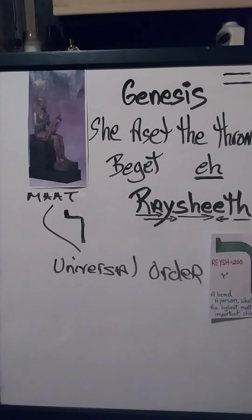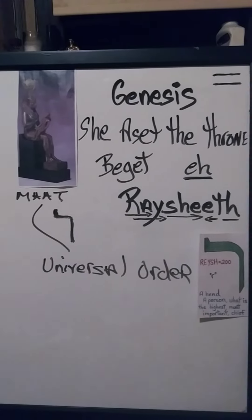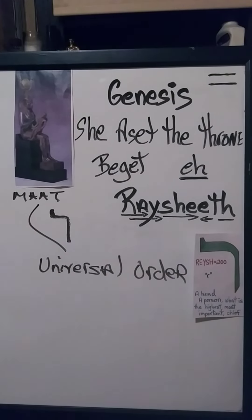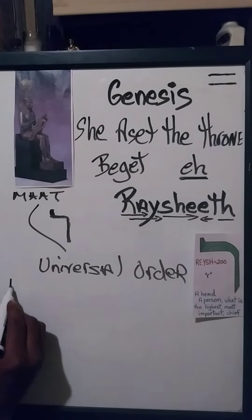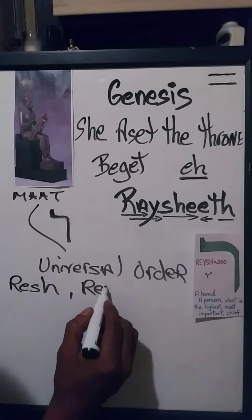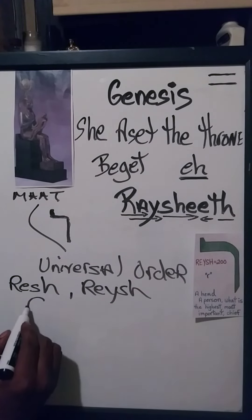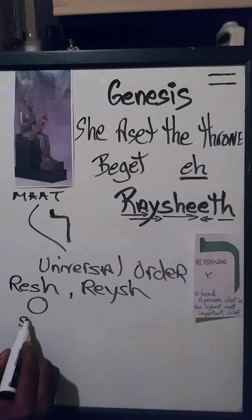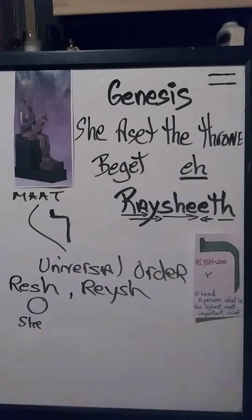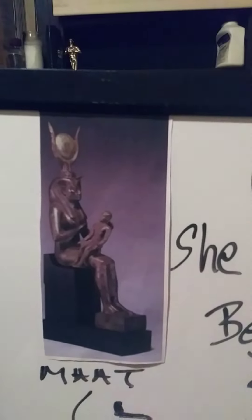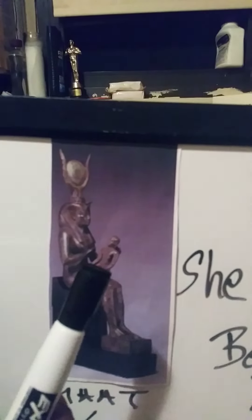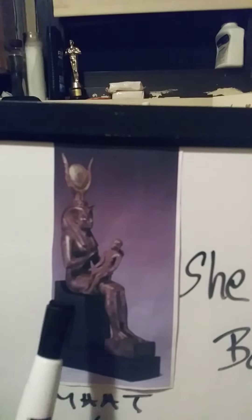I'm pretty sure I defined enough of this. So remember, with this Rashith, I just like doing this right here — the sun, and then she. I can make the people now but I'm not going to make them yet, because there's more to this. This is the first part. And the first part of Genesis — the beginning, 'in the beginning' — is this woman and this kid, or this man and this throne and this son.